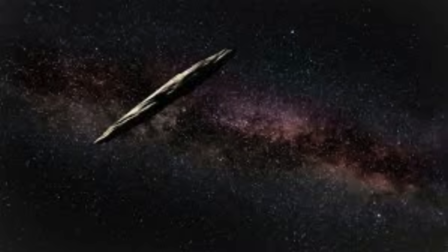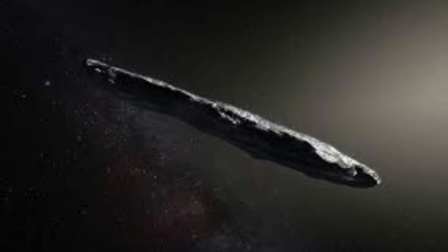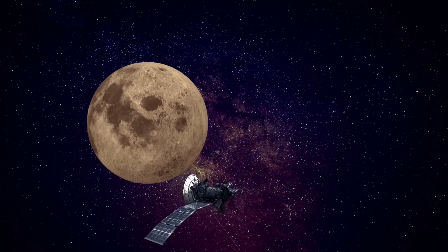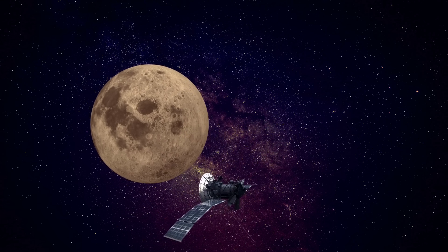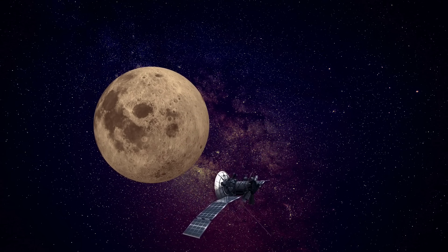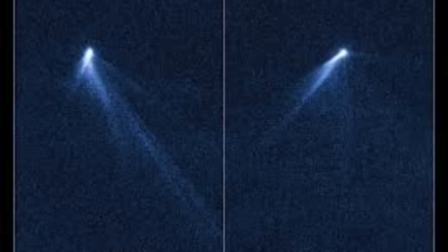Let's pause for a moment to consider the historical context. In 2017, the discovery of Oumuamua rocked the astronomical world. That slender, tumbling object sped through our solar system with an unexplained acceleration, showing no visible outgassing or comet-like tail.